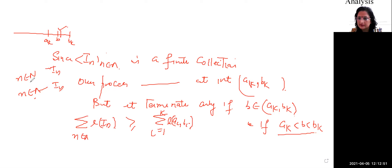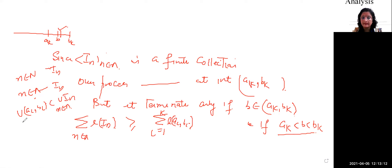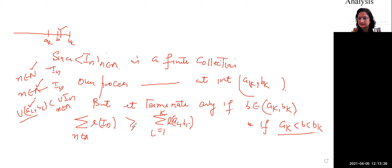This was a sub-collection of the set of natural numbers. From that, we generated open intervals. The union of I_n over n in a finite subset of natural numbers is contained in the full collection. That is why we write: the summation of the length of I_n, for n belonging to the finite set of natural numbers, is greater than or equal to the summation of the length of (AI, BI).